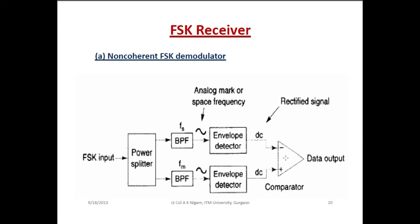The FSK receiver is categorized into the non-coherent FSK demodulator and the coherent FSK demodulator. First we will discuss the non-coherent FSK demodulator. For the FSK receiver, the FSK input is provided to the power splitter, which is then given to two bandpass filters. One space frequency is given to one bandpass filter and the mark frequency to the other. Marks are represented by logic 1 and space by logic 0. Both analog mark and space frequencies are given to the envelope detector, which measures the amplitude level of the frequency. That rectified signal is then given to the comparator.